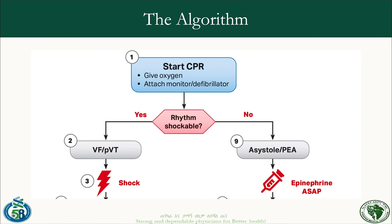The 2020 algorithm: once cardiac arrest is recognized, immediately start CPR and call your team. If two people are present, one provides CPR while the other activates the emergency response system. If alone, shout for help and start CPR. Simultaneously, bring an AMBU bag and position it on the patient's face, and attach monitor pads — first pad just below the right clavicle, second just above the apex on the left, around the fifth intercostal space.